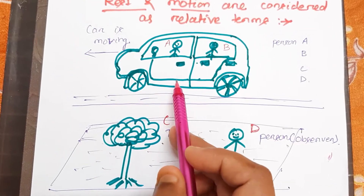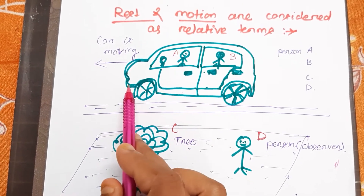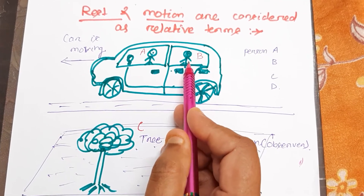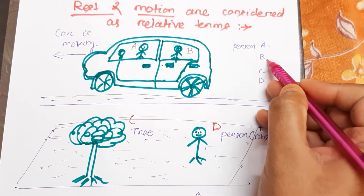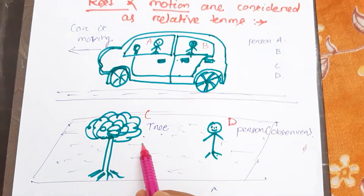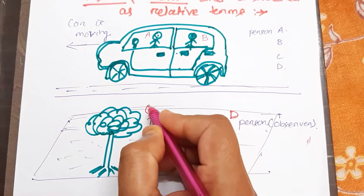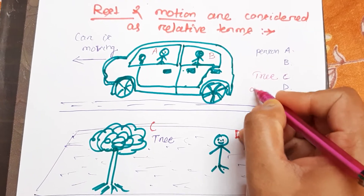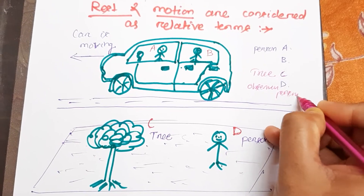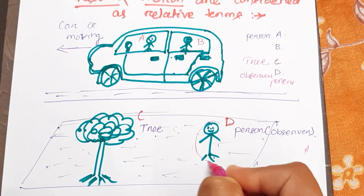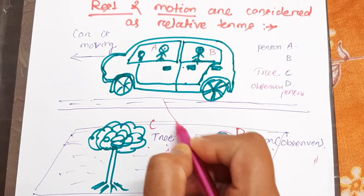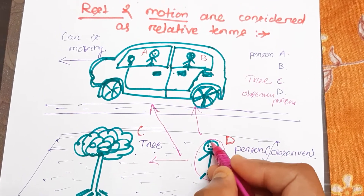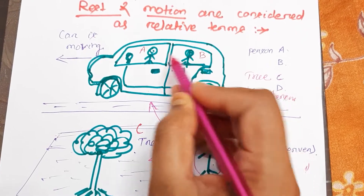Consider a moving car with two persons inside: person A is sitting in the front seat and person B is sitting in the back seat. Outside the car, there is a tree C and an observer D who observes the car, the tree, and the people. We are considering two observers — one inside the vehicle (person B) and one outside (person D).